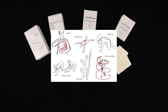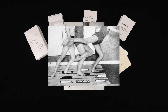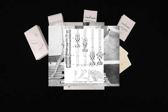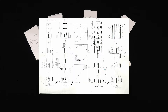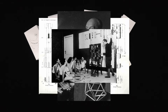Il est basé sur un système d'écriture graphique du mouvement nommé Cinétographie Laban. La Cinétographie Laban ou Laban Notation permet de transcrire tous les mouvements du corps humain, du plus simple au plus complexe. Elle a été développée par Rudolf von Laban et publiée en 1928 avec l'aide de ses collaborateurs dont Albrecht Knust,